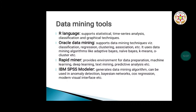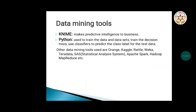Through deep learning, the machine itself is able to analyze or create patterns out of multiple data. IBM SPSS Modeler is another tool which generates data mining algorithms and can be used in anomaly detection and Bayesian networks. It also makes predictive intelligence available to businesses. Python is used to train data and datasets, train decision trees, and use classifiers to predict the class label for test data.